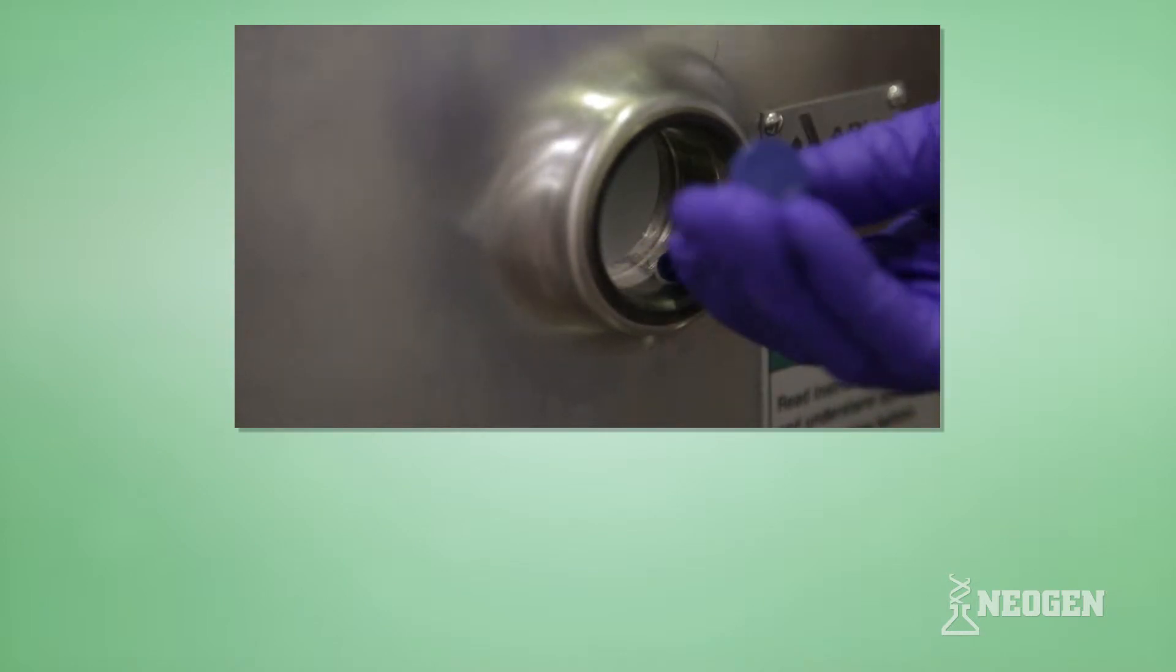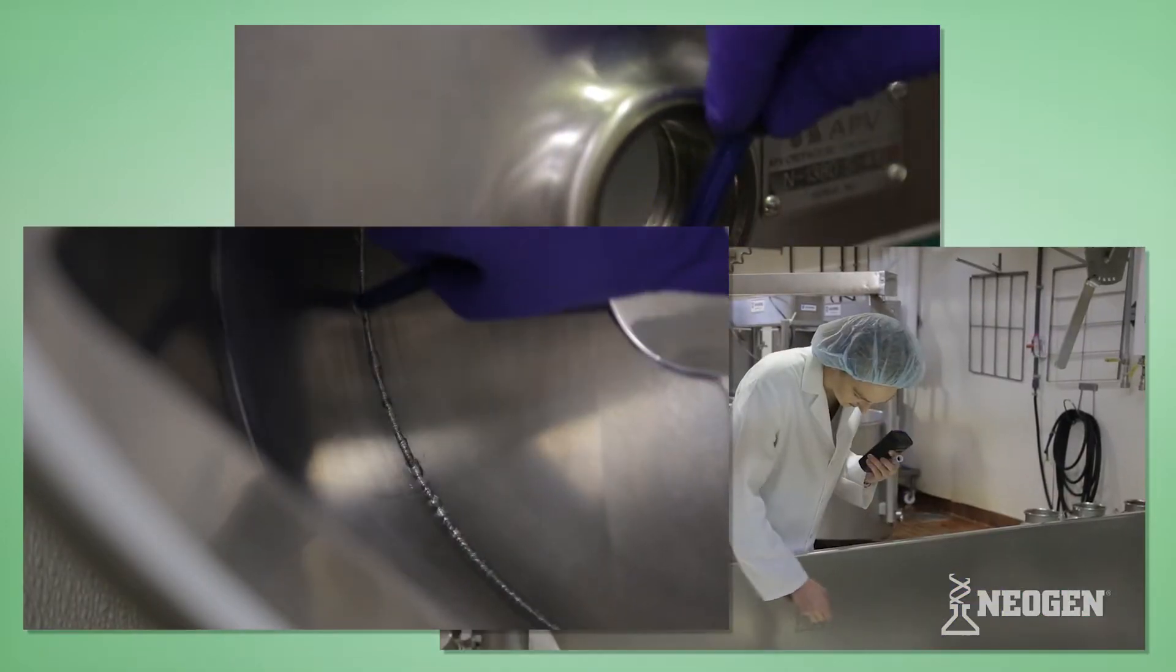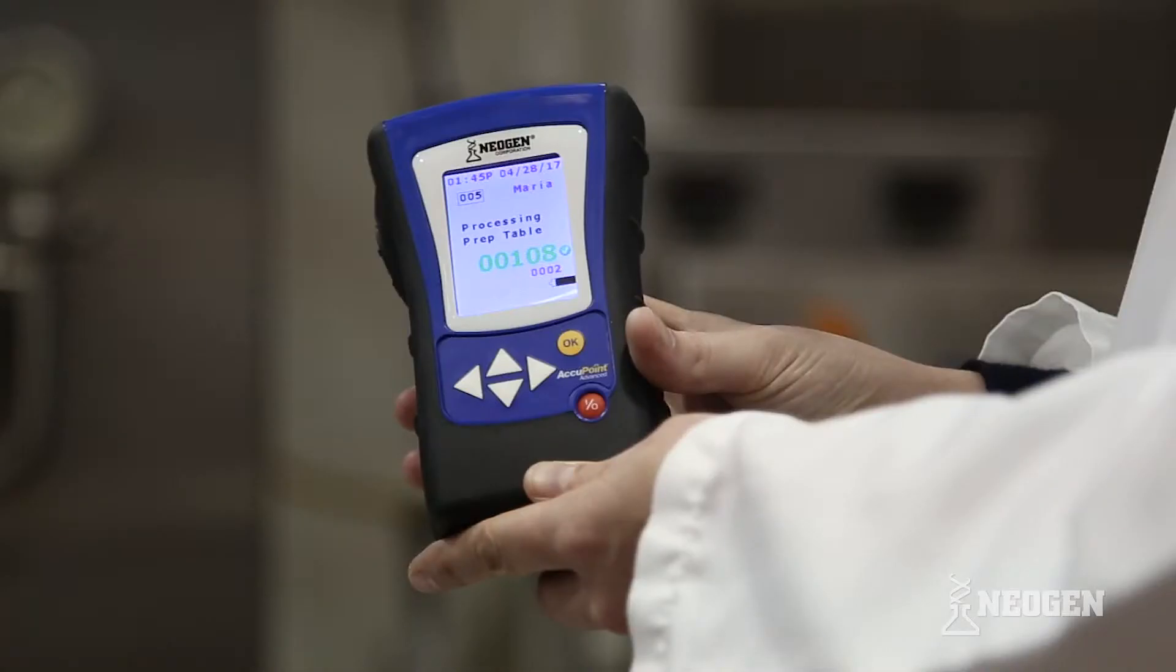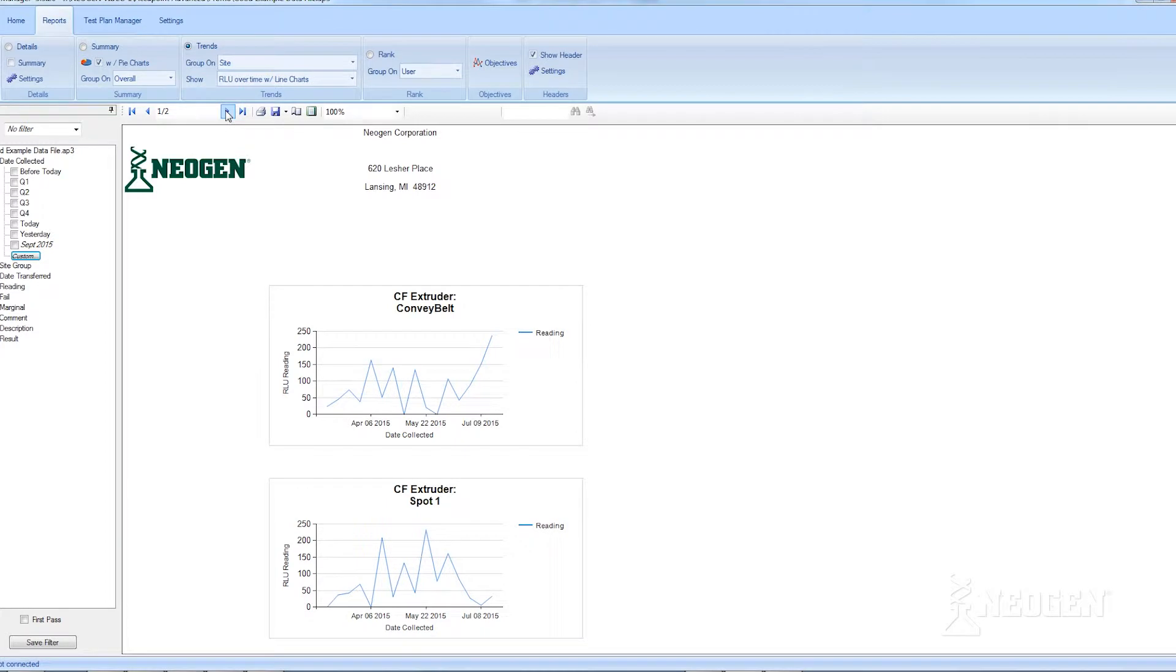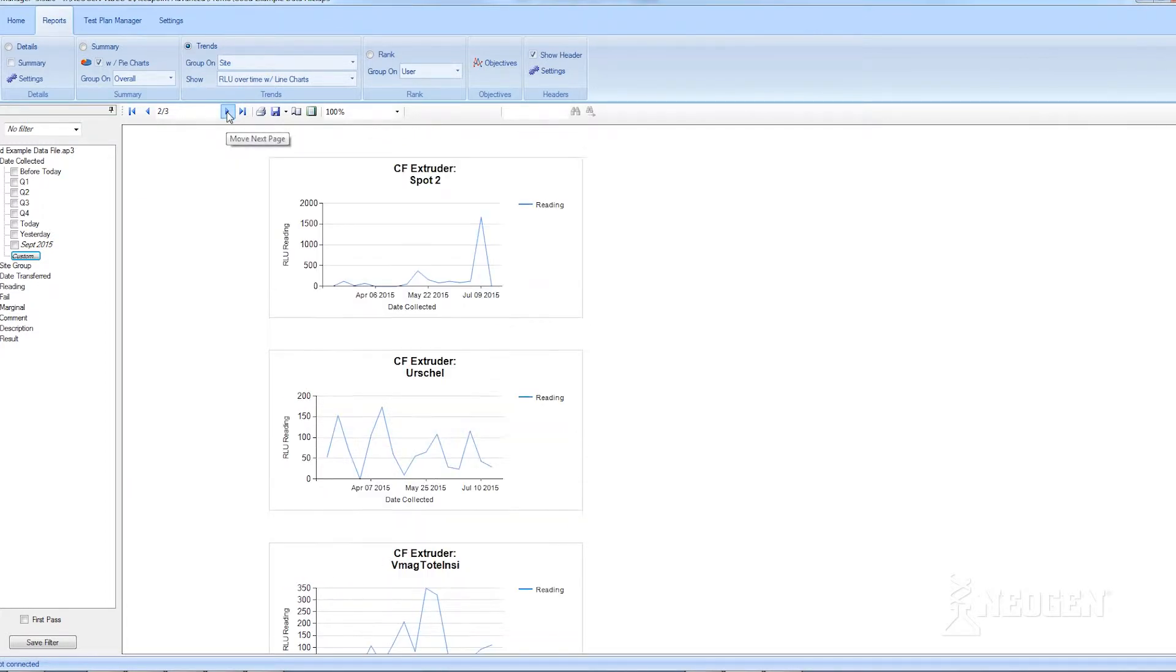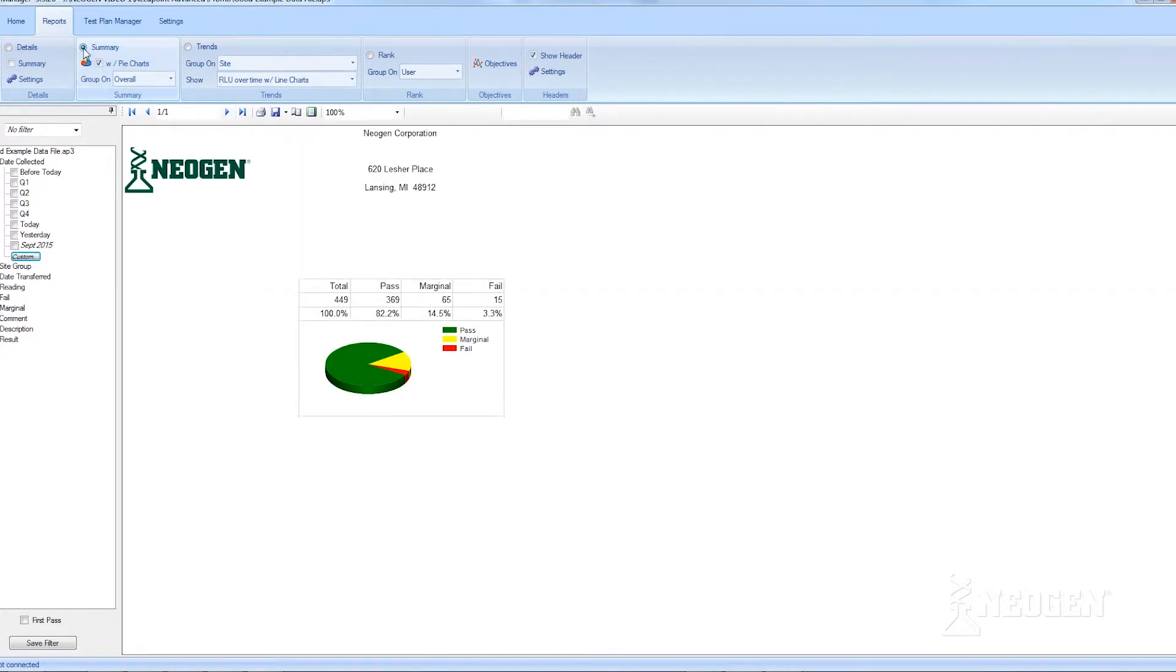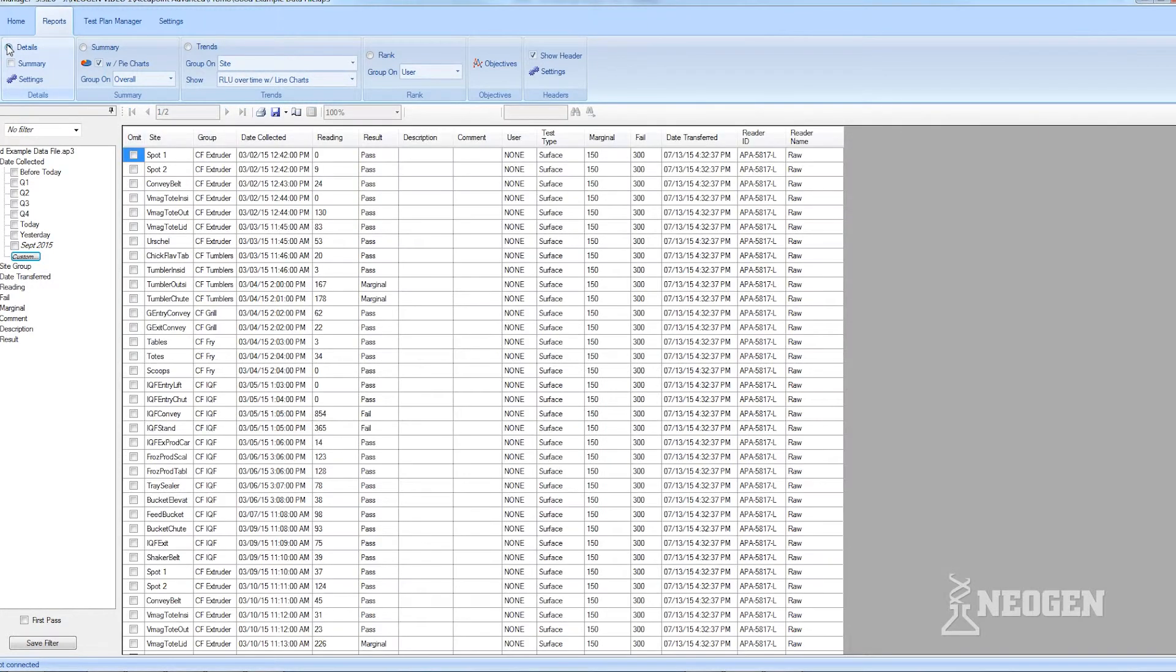Accupoint Advanced is the best system available for recovering ATP. Accupoint Advanced results are reported as Relative Light Units, or RLU, and its unique RLU scale allows for higher resolution across a broad range. Using the system's data manager software to review results can help detect slight changes in ATP levels.